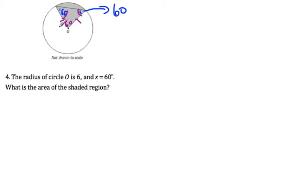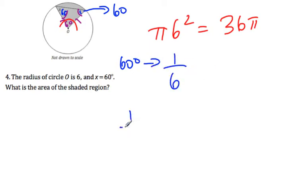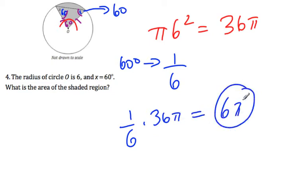Now we know the central angle is 60 degrees. If the radius is 6, the area of the whole circle is pi times 6 squared, which is 36 pi. But we only have 60 degrees, which is one-sixth of the circle. So we have one-sixth of 36 pi, which equals 6 pi. That's the answer for the shaded region.